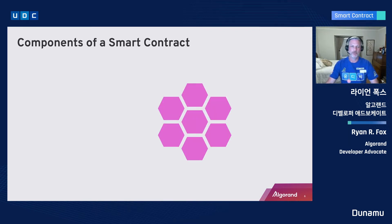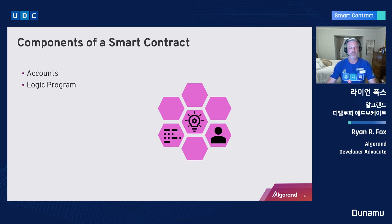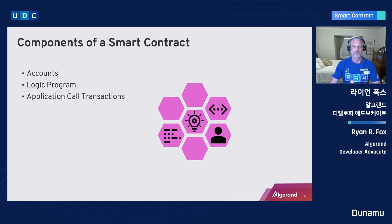Let's take a look at the components of a smart contract. We'll start with blockchain accounts. Think of this as you, the developer, who will be authorizing the deployment of your smart contract to the blockchain. Accounts will also represent users of your smart contract. Next, we'll take a look at the logic program, or your smart contract — this is a computer program that gets installed into the blockchain by the developer, and importantly, it will compile into an immutable identifier. Next, we have application call transactions. These are special transactions addressing a specific application identifier and may include data that the program logic will process.